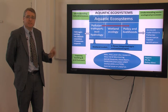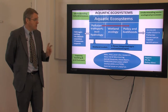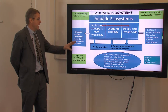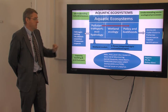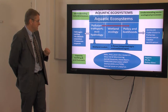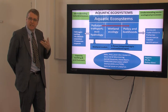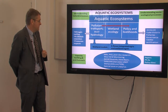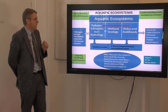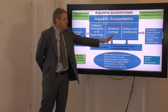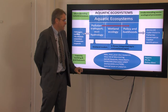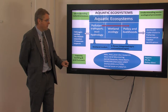So the aquatic ecosystems research theme covers pollutant transport, eco-hydrology including nutrient recycling, heavy metal processes — or the processes of heavy metals transport through the ecosystems — and the pressures and impacts on those aquatic systems. It also includes research and advice on policy and livelihoods.